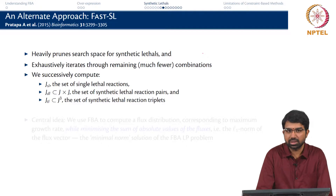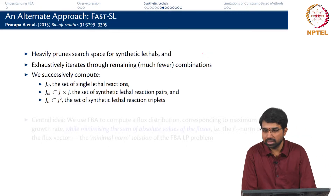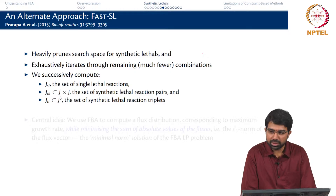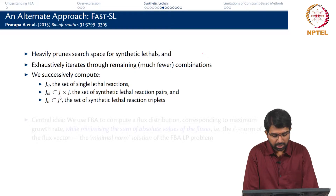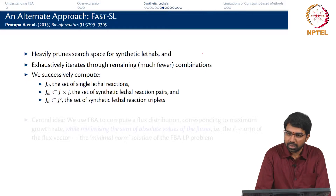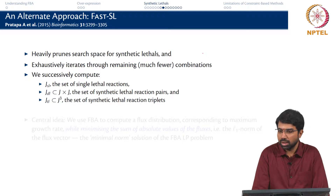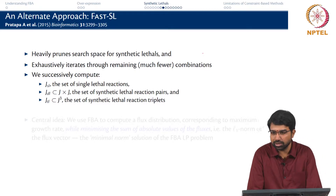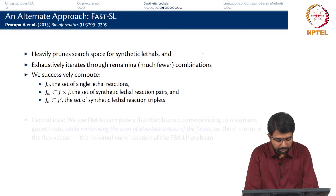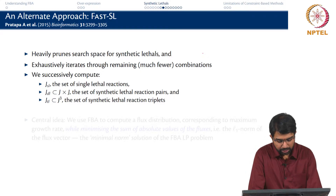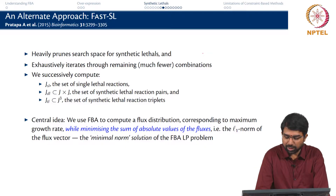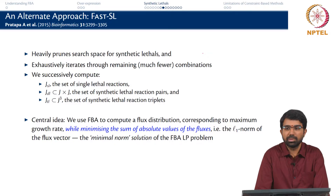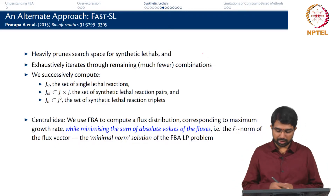We successively compute three sets. First we call JSL, the set of single lethals, then JDL — where J is the set of all reactions, J cross J is the set of all pairs of reactions, and JDL is a subset of that. JTL is a subset of JQ, meaning any three reactions from the total network. The central idea is we use FBA to compute a particular flux distribution and use this vector to further simplify the computations.